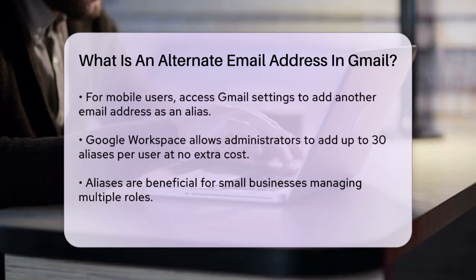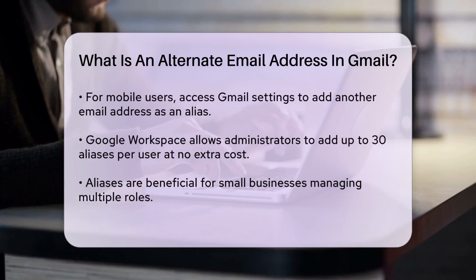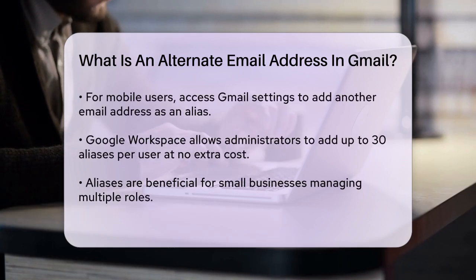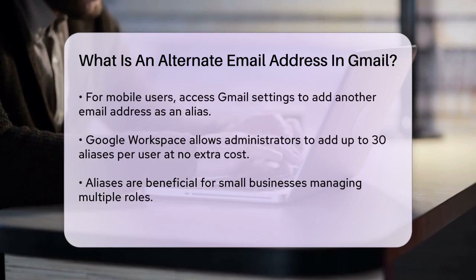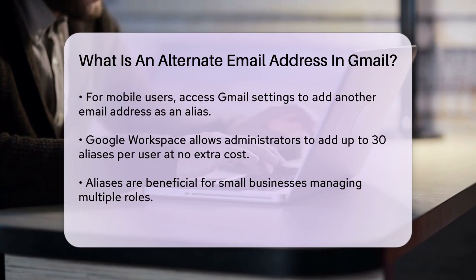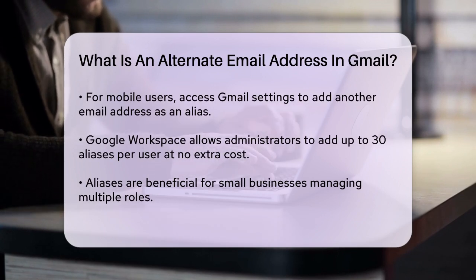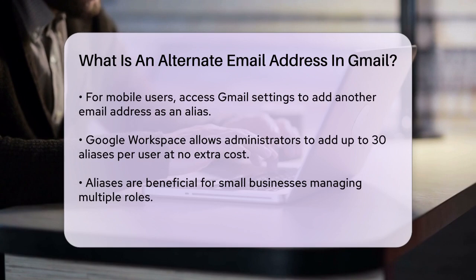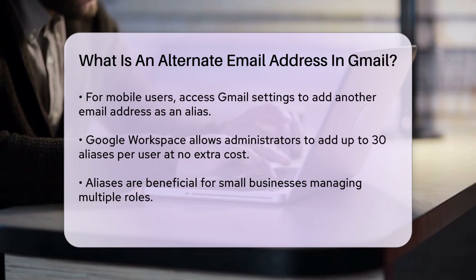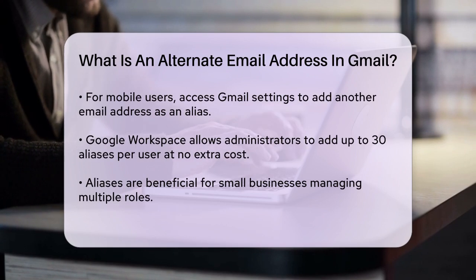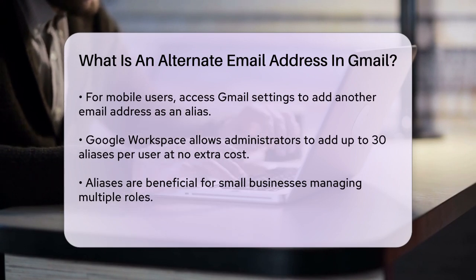In the Gmail settings, you can add another email address as an alias. On your mobile device, you would open the Gmail app, go to Settings, select your account, and then tap on Add Another Email Address. Here, you can enter the name and email address for your alias.